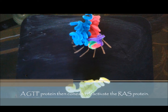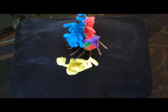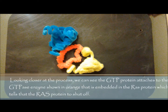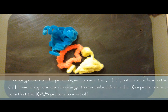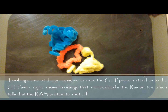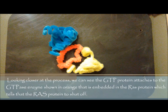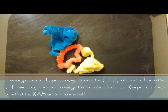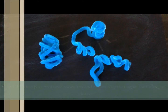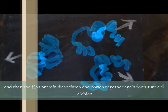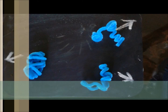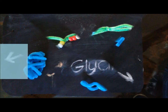A GTP protein then comes to deactivate the RAS protein. Looking closer at the process, we can see that the GTP protein attaches to the GTPase enzyme, shown in orange, that is embedded in the RAS protein, which tells the RAS protein to shut off. The RAS protein then dissociates and comes together again for future cell division.